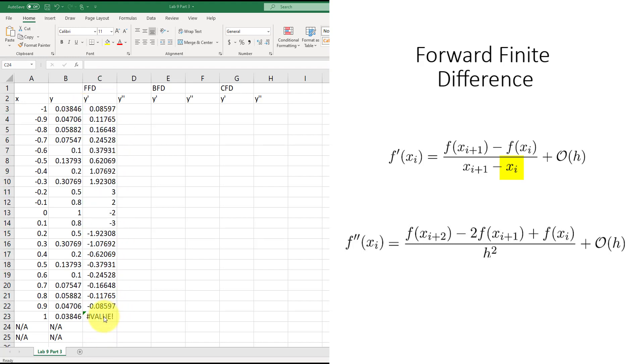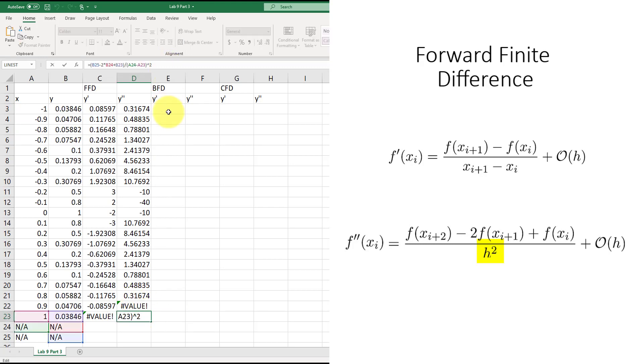As you can see, we were unable to calculate the last data point, since we required a successive data point which did not exist. Moving on to the second derivative, which is equal to f(x_i+2) minus 2 times f(x_i+1) plus f(x_i) divided by h squared, which is A4 minus A3, and then squared. Go ahead and drag the cell. You can see we were unable to find the last two derivatives because we required two successive cells that did not exist.